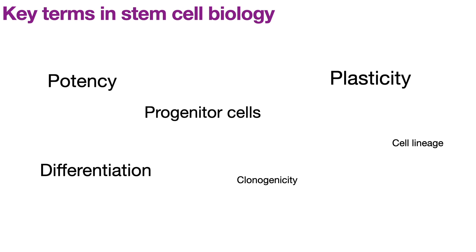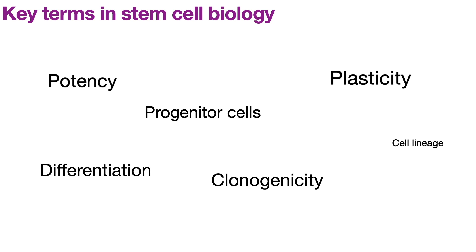Progenitor cells are differentiated cells that can give rise to other cell types and have high proliferative abilities. They reside in tissues in a quiescent stage and upon injury they start dividing. They differ from stem cells in that stem cells are unspecialized, while progenitor cells are already somewhat specialized. Clonogenicity is the ability of a cell to divide into the same genetically identical cell type without losing its ability to proliferate.